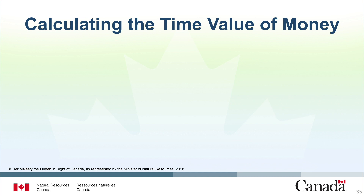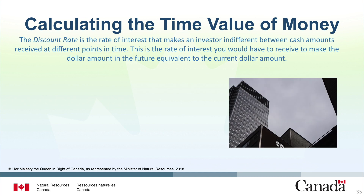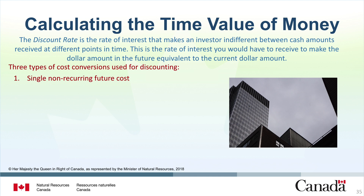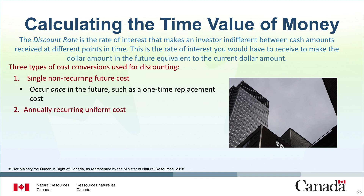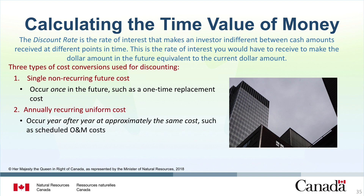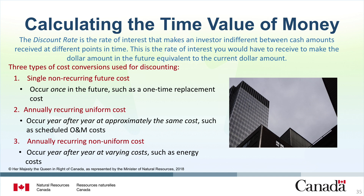The discount rate is the interest rate that makes an investor indifferent between cash amounts received from different points in time. We will look at three types of cost conversions for discounting. First, single non-recurring future costs, such as a one-time replacement cost, occur once in the future and should be adjusted to present value. Second, annually recurring uniform costs, such as scheduled operations and maintenance costs, occur year after year in approximately the same amount each year. Third, annually recurring non-uniform costs, like energy costs, recur every year but cost amounts vary from year to year — for example, the cost of electricity may vary but occurs year after year.